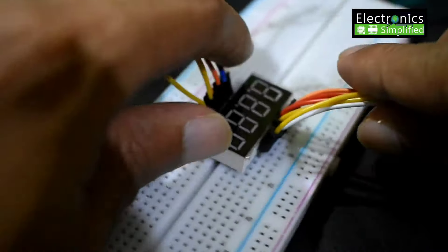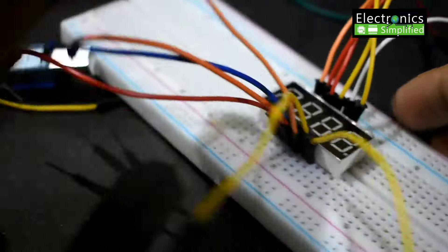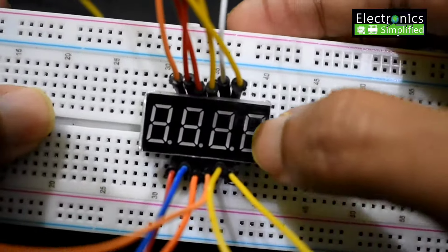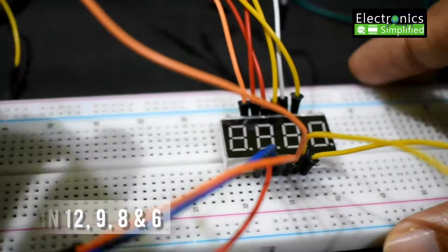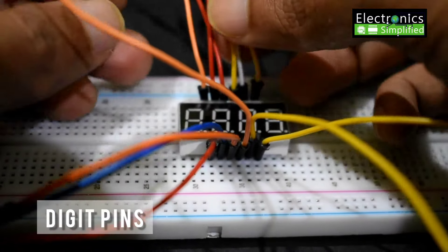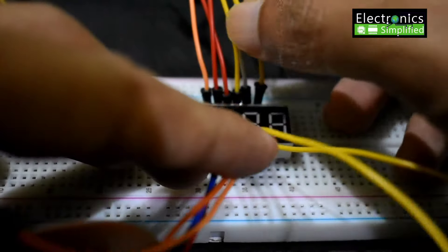Okay, so these digit pins are basically the activation pins for all my digits. So all these digits, they are represented by digit 1, digit 2, digit 3 and digit 4. So pin number 12, 9, 8 and 6 are digit pins.